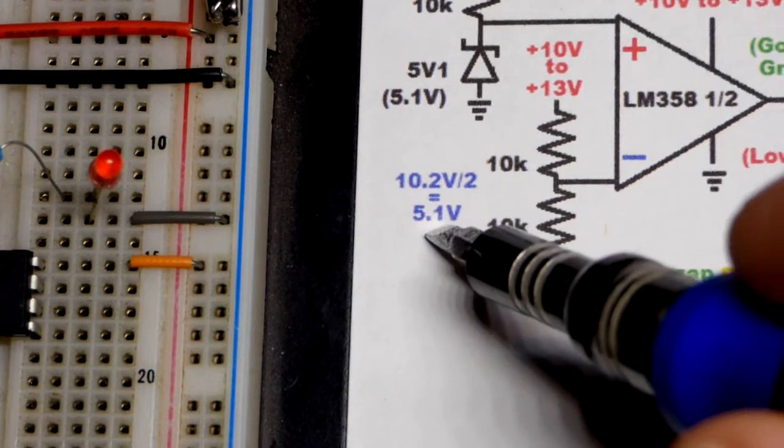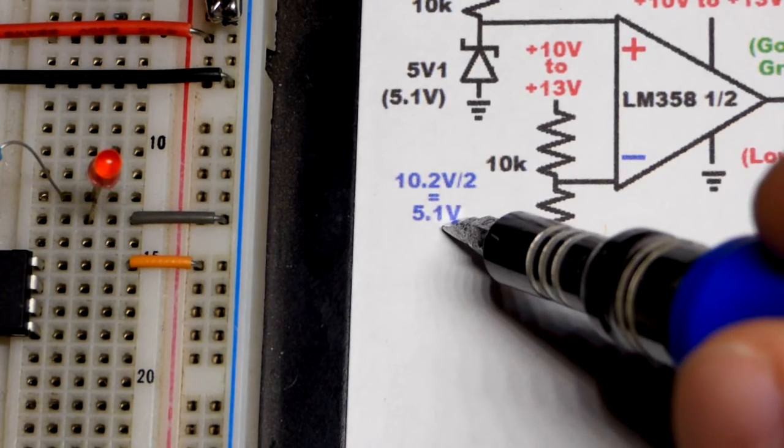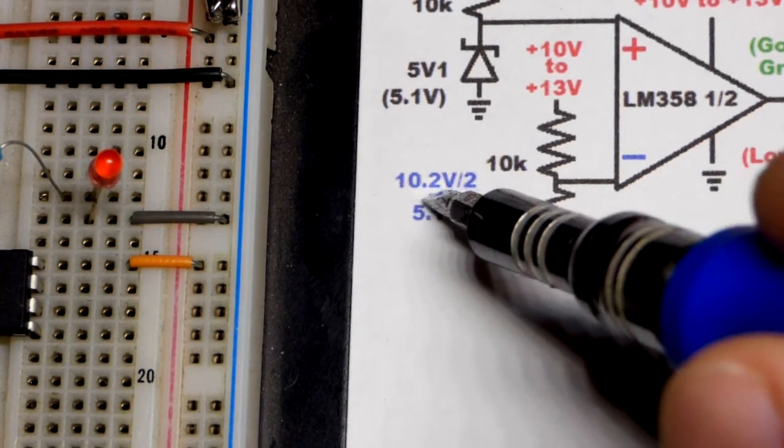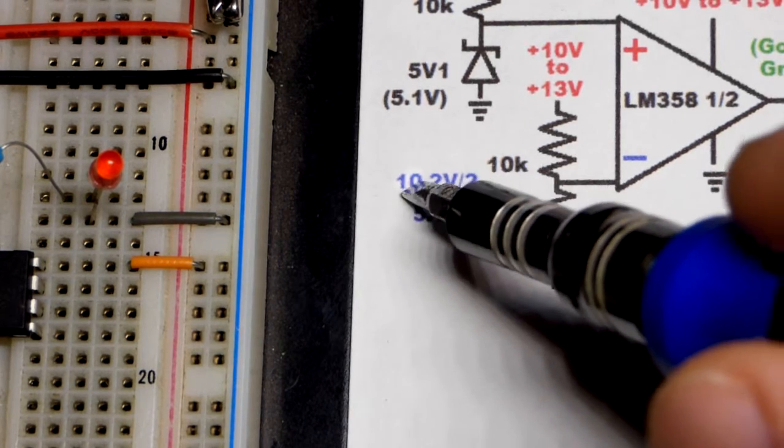And of course we had that voltage that we set before, 5.1 volts. 10.2 volts is twice that much. So it's half as much.